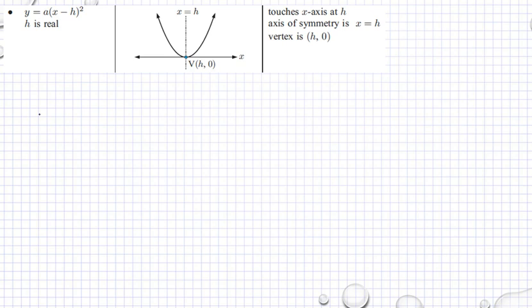This one is a little bit easier. When you have a square, it touches the x-axis in just one point, which is h. The h is also your axis of symmetry and also the coordinate of your vertex.